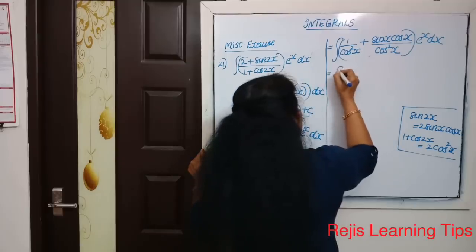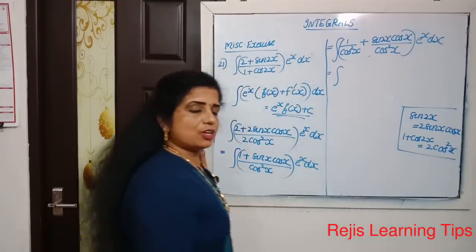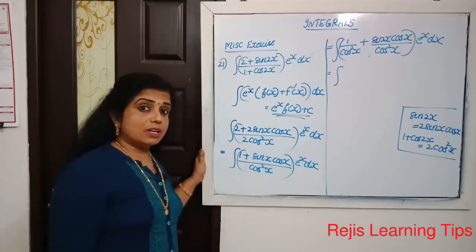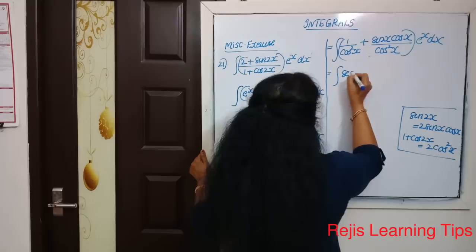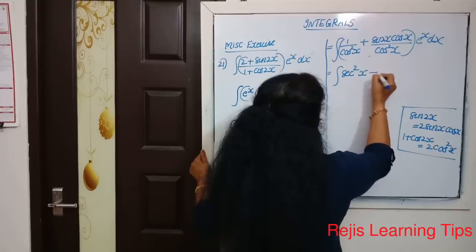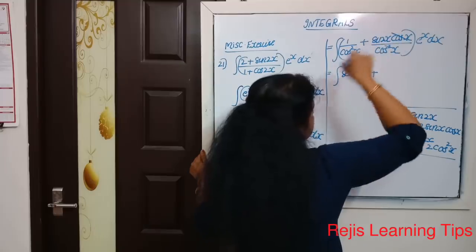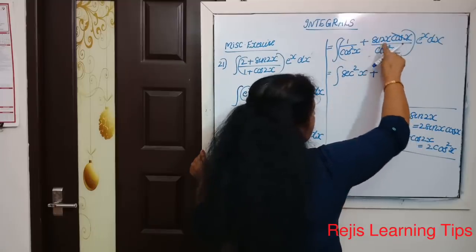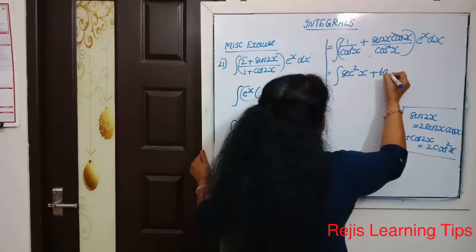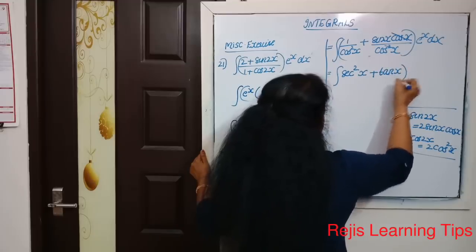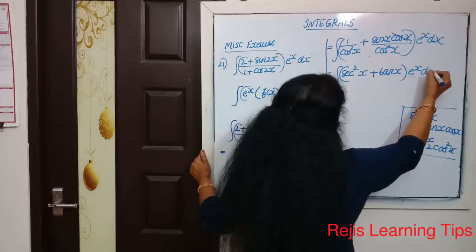Now, 1/cos²x equals sec²x. And sinx·cosx divided by cos²x — we can cancel one cosx — gives sinx/cosx, which is tanx. So the integral becomes the integral of (sec²x + tanx) times e raised to x dx.